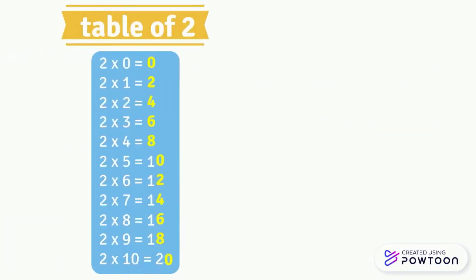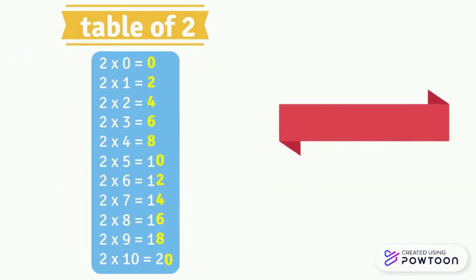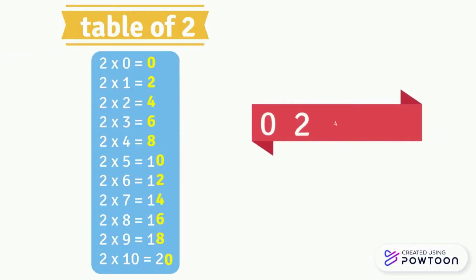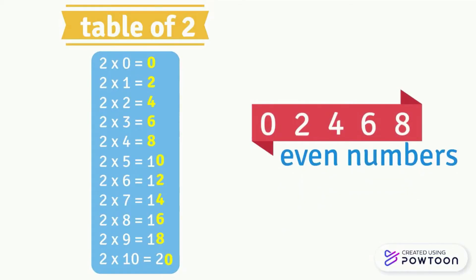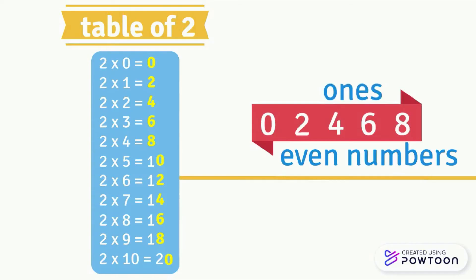Observe the multiplication table of 2. All results have 0, 2, 4, 6, or 8 in the ones place. These numbers are called even numbers. Since their ones digit is 0, 2, 4, 6, or 8, all even numbers are multiples of 2.